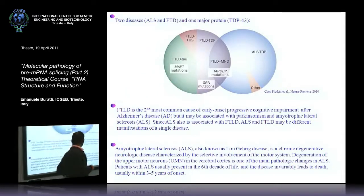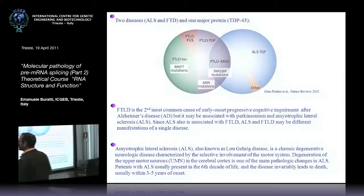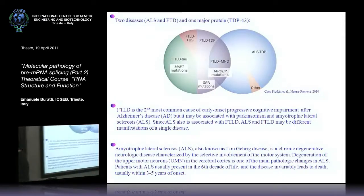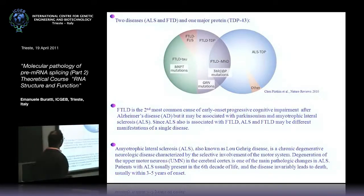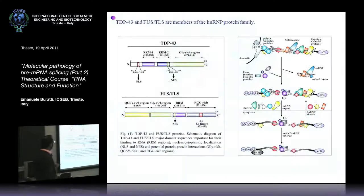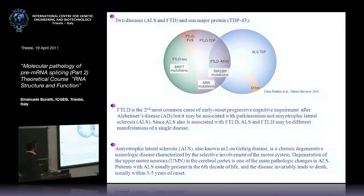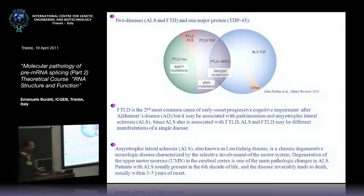What I'm going to tell you about is splicing changes in a particular splicing factor and two neurodegenerative diseases: ALS, amyotrophic lateral sclerosis, and frontotemporal dementia. Amyotrophic lateral sclerosis doesn't need an introduction — you all know what it is.